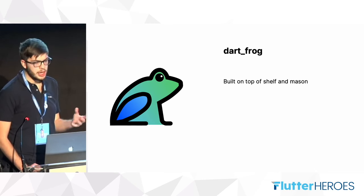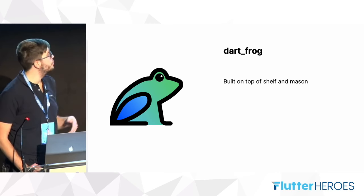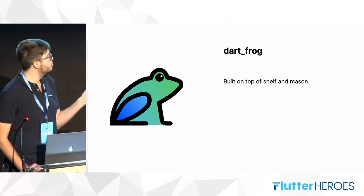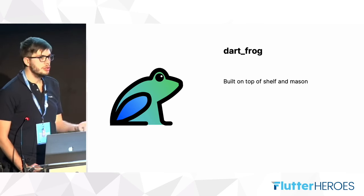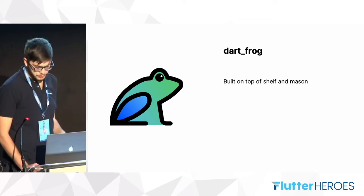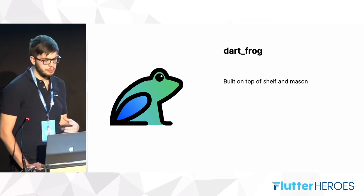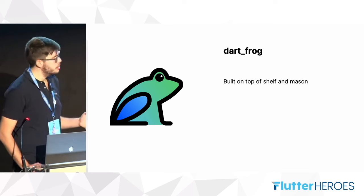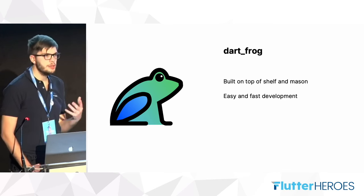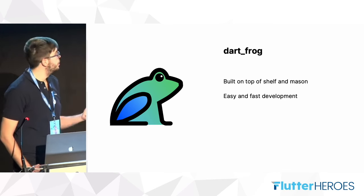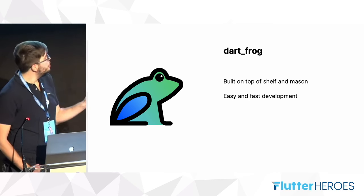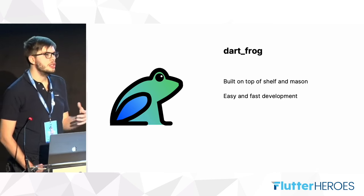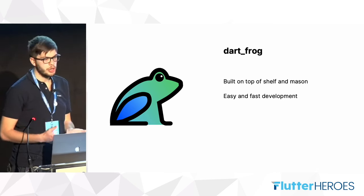Shelf is a Dart package that allows you to build and manage web server middleware. Mason is also a recent package that allows you to generate code based on templates. Dart Frog provides very small core APIs that allow for easy and fast development of backend and middleware, and it reduces a lot of the startup time of a middleware project.